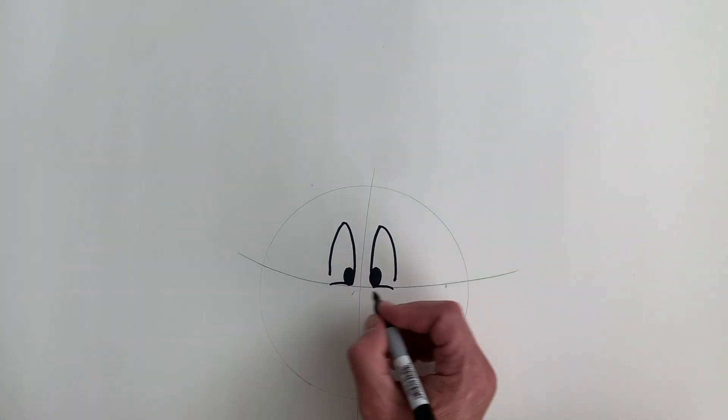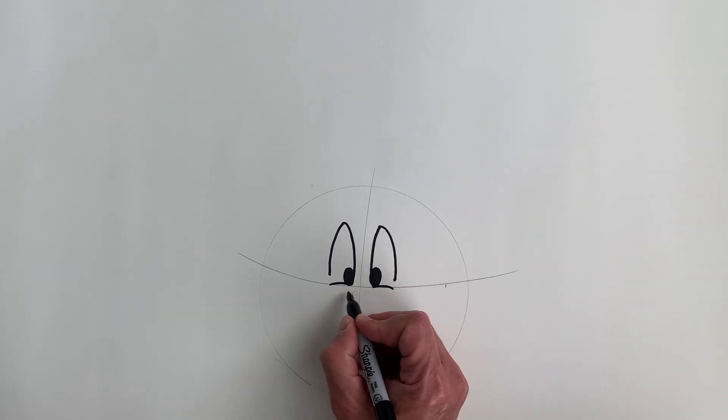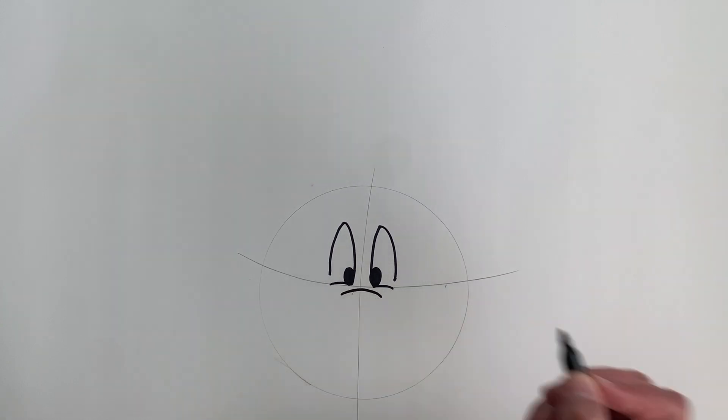All right, again, like all characters in my series, they all start out kind of the same. We're going to do a little line underneath the eyes, and it's a little line like so. Nothing more, nothing less.